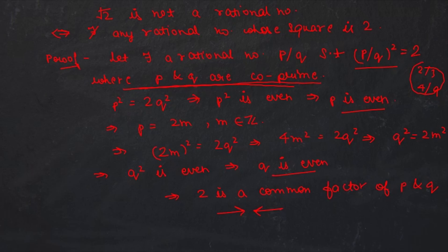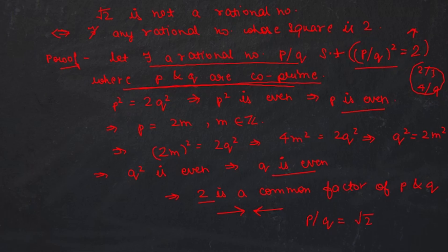This is a contradiction, because we assumed p and q are co-prime. So our assumption was wrong — there does not exist any rational number p/q such that (p/q)² = 2. Equivalently, √2 is not a rational number, since taking square roots of both sides of p²/q² = 2 would give p/q = √2.